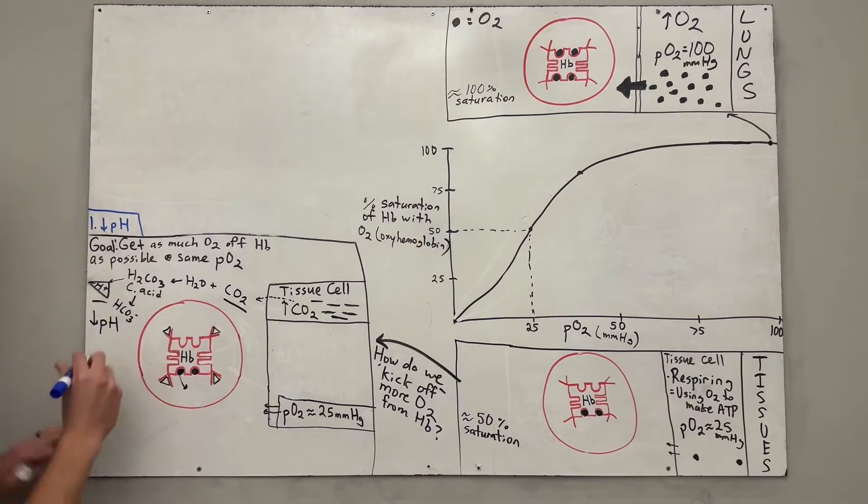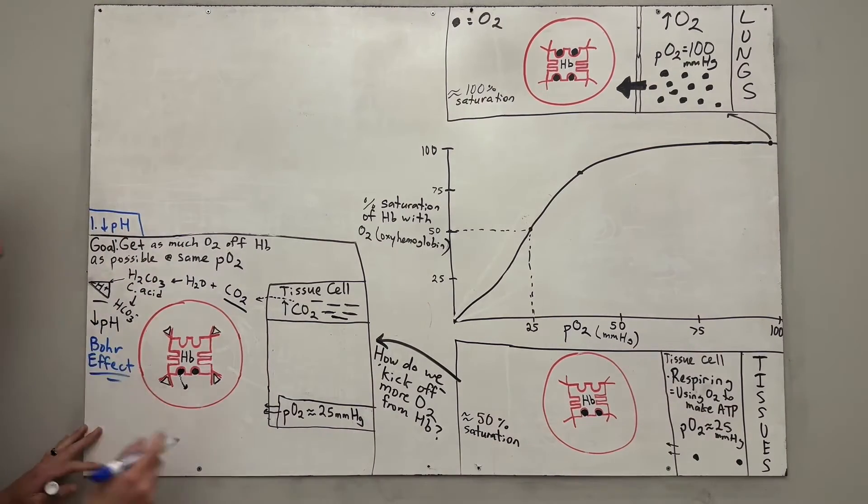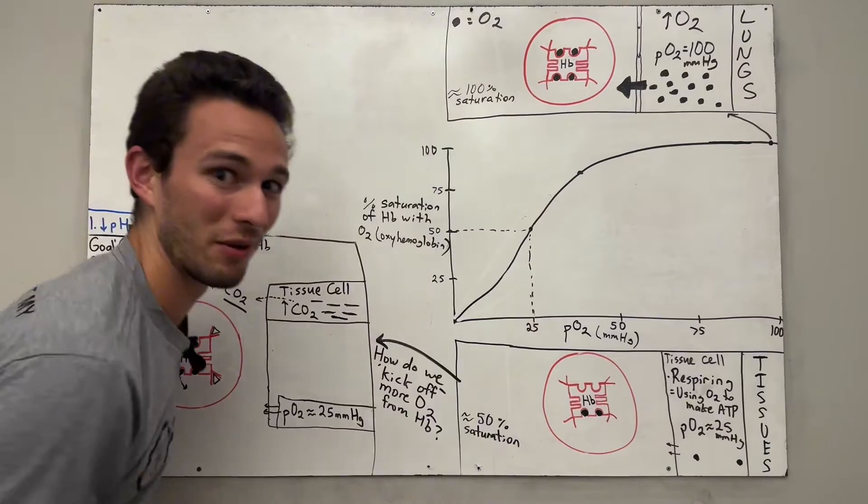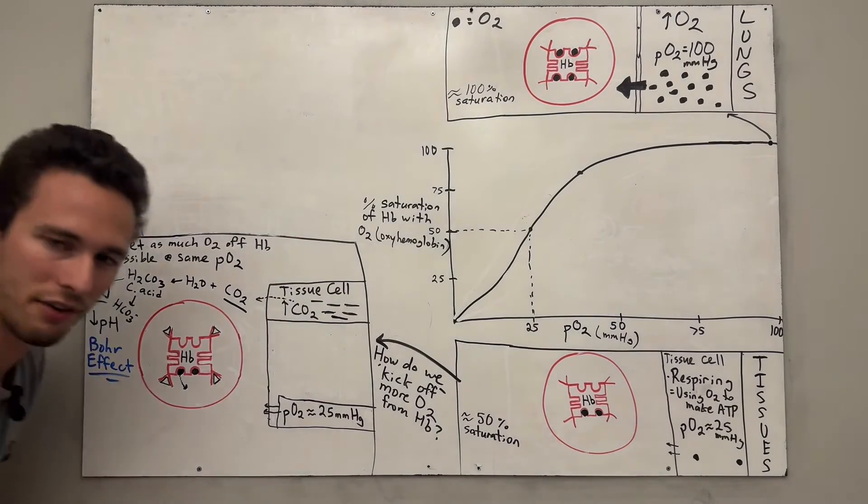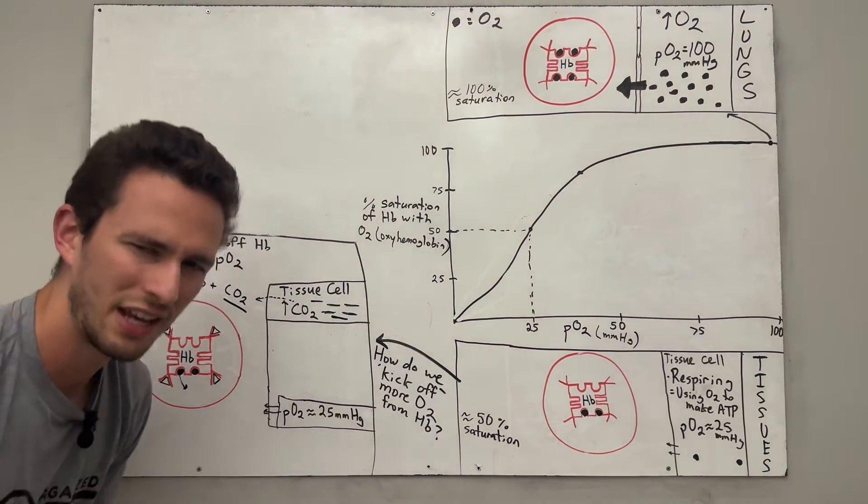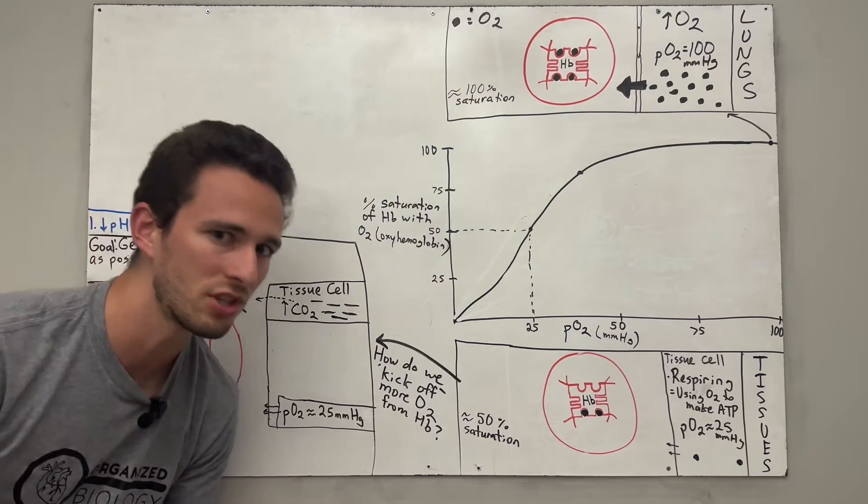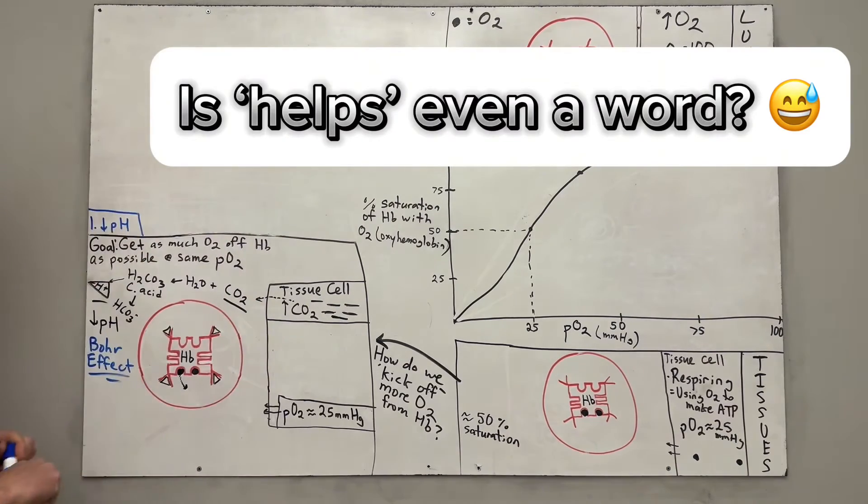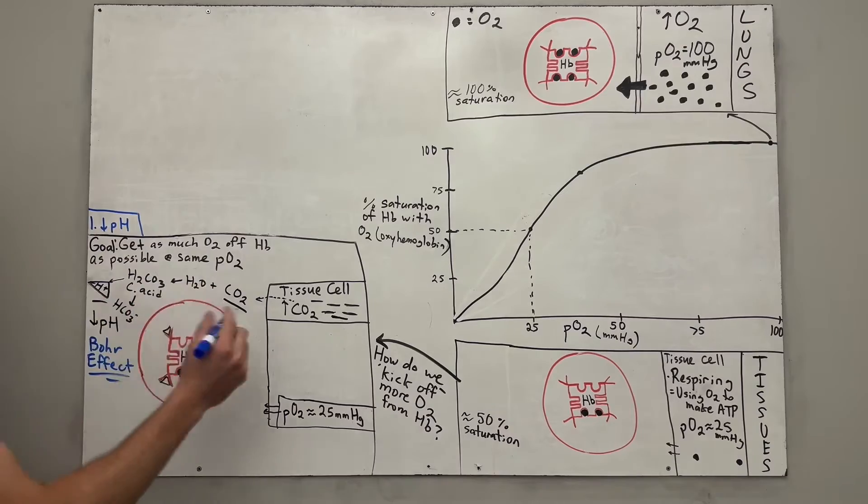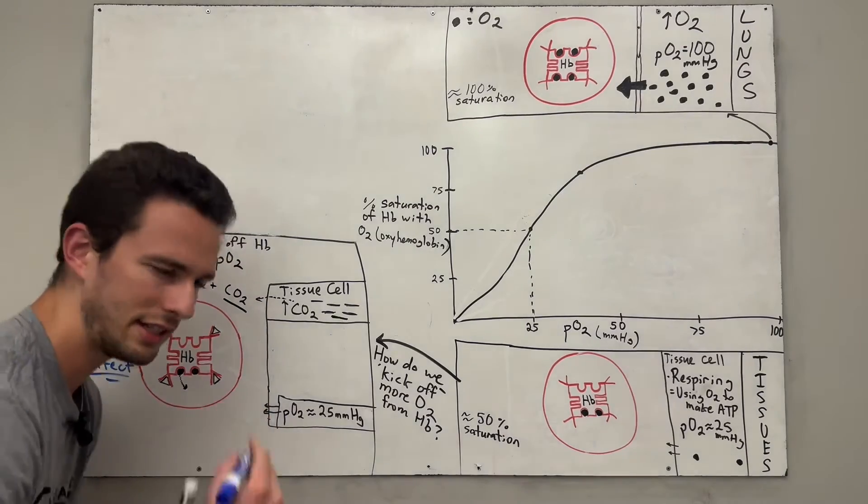And fun fact, this whole process is called the Bohr effect. And if you want to learn more about that, I recommend you watch this video next. But just the pH itself is not enough to force a ton of oxygen off. In fact, we need a couple other helps to get to this goal.